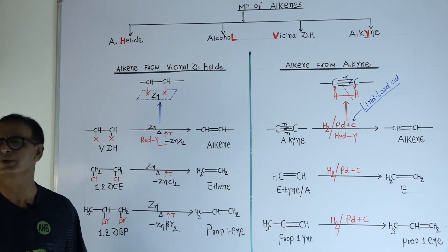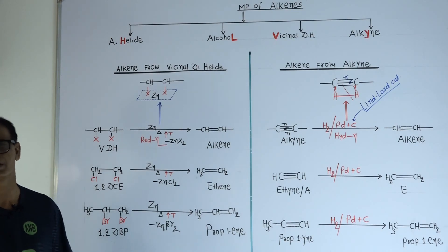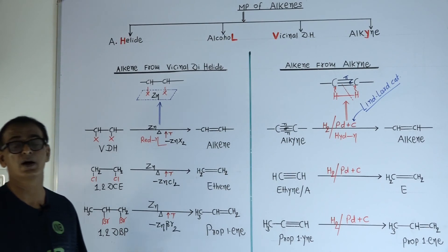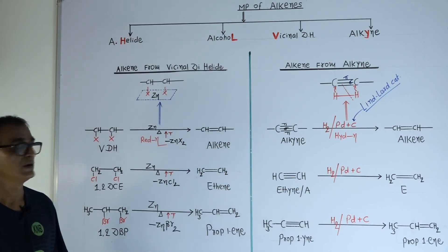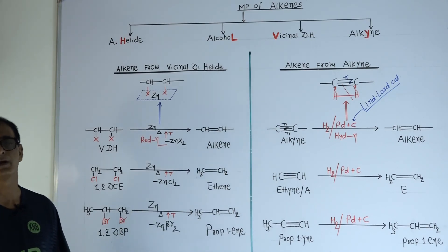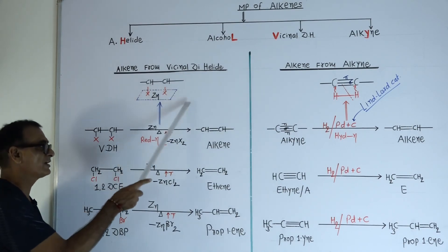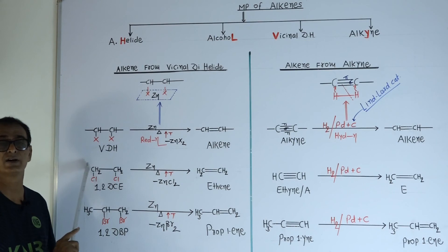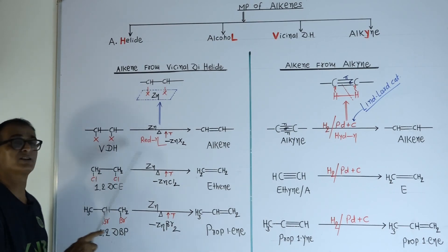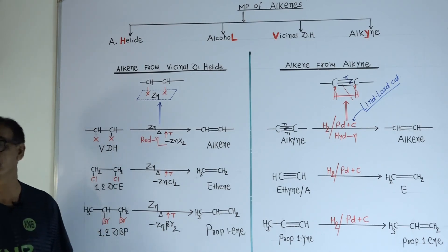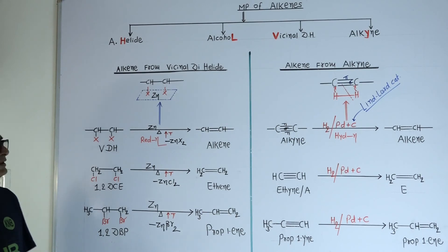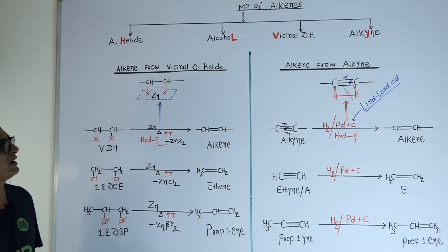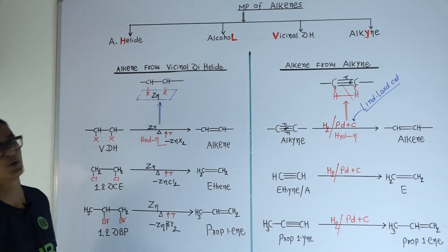During the first reaction, both halogen atoms are removed from the vicinal dihalide, so that reaction is also known as a dehalogenation reaction. With this, the methods of preparation of alkene compounds are complete.